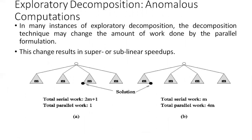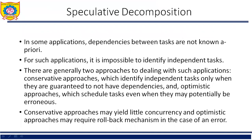In many instances of exploratory decomposition, the decomposition technique may change the amount of work done by the parallel formulation, resulting in super or sub-linear speedup. Speculative decomposition is the last method of decomposition. In some applications, dependencies between tasks are not known prior. For such applications, it is impossible to identify independent tasks. There are generally two approaches: a conservative approach, which identifies independent tasks only when they are guaranteed to have no dependencies, and an optimistic approach, which schedules tasks even when they may potentially have errors. The conservative approach may yield little concurrency and the optimistic approach may require a rollback mechanism in case of error.